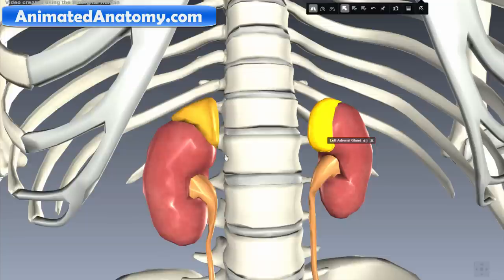Resting on the top of kidneys is adrenal gland on the right and adrenal gland on the left.